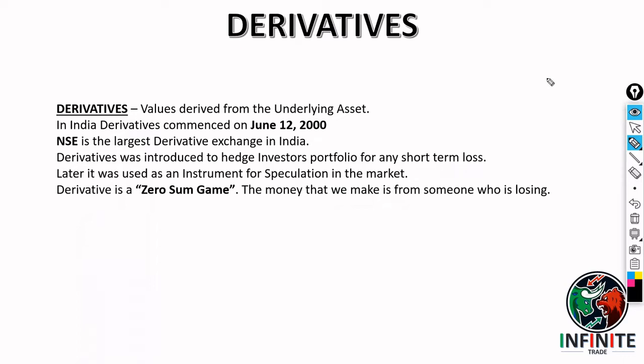Initially derivatives were introduced to hedge investors' portfolios against short-term loss. For example, people used to buy a thousand quantities of a particular share and then sell that much quantity of a call option to hedge their portfolio, so in case of any short-term downside they cover that money. But later it is being used as an instrument for speculation — we buy call options, buy put options, sell call options, sell put options — we speculate and try to predict the direction of the market.